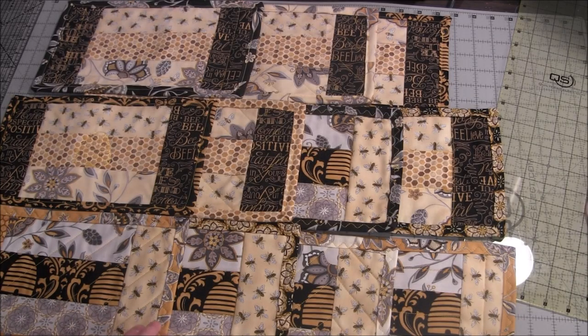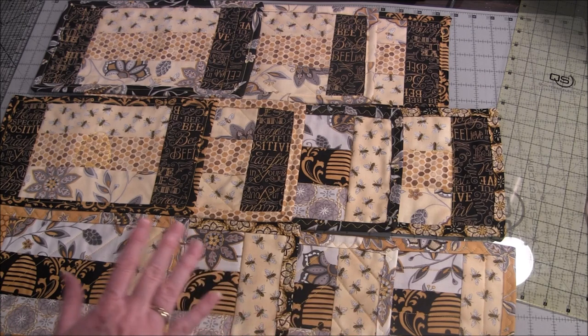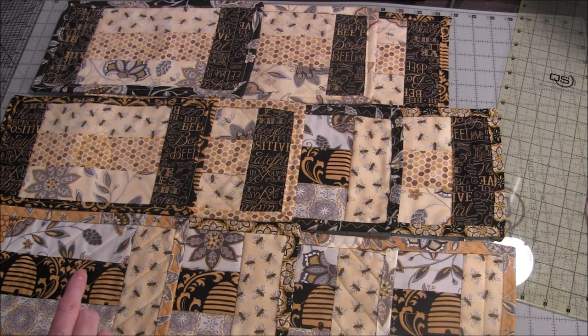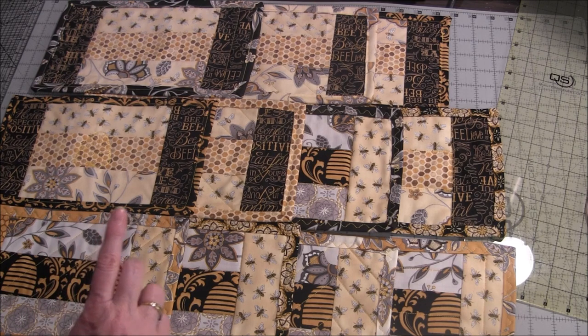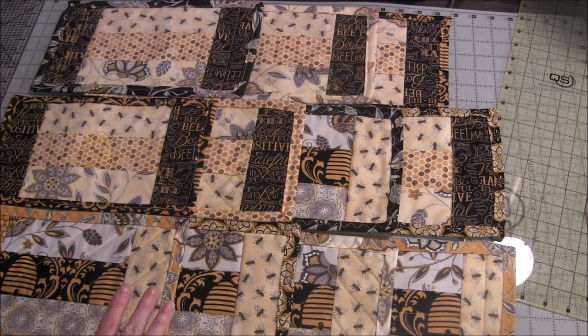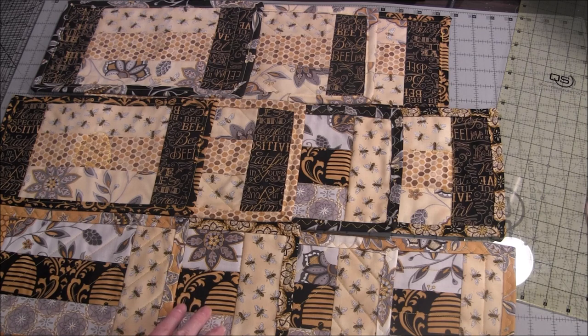You can make six tops for these jelly roll mug rugs from five jelly roll strips, and then you would need one binding strip for each mug rug. So that would be 11 strips from your jelly roll to make six mug rugs.